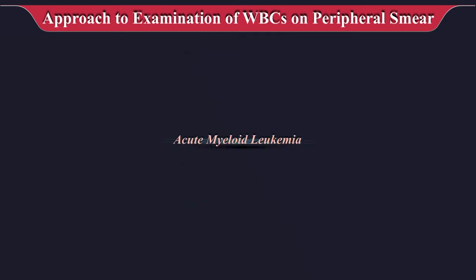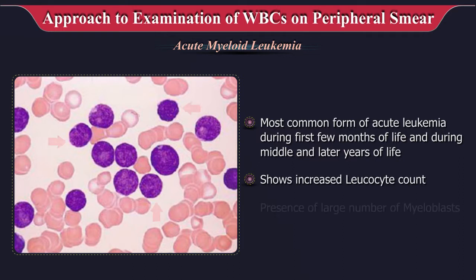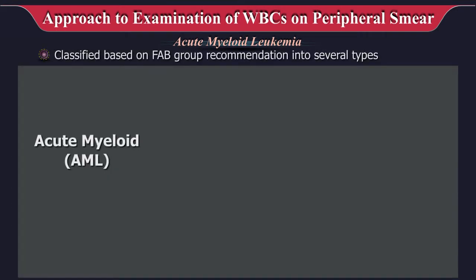Let us see a brief overview of leukemias. Acute myeloid leukemia is the most common form of acute leukemia during the first few months of life and during middle and later years of life. It shows increased leukocyte count, with a large number of myeloblasts. Presence of Auer rods helps in diagnosis.